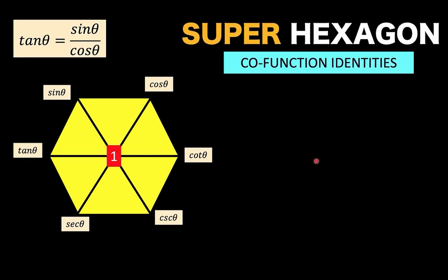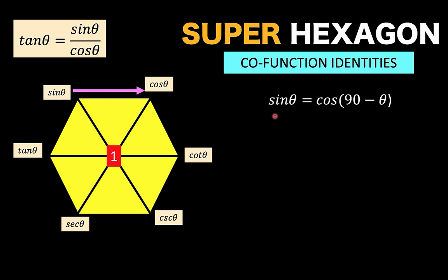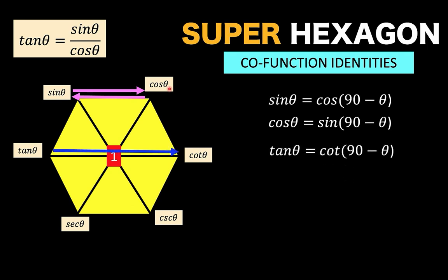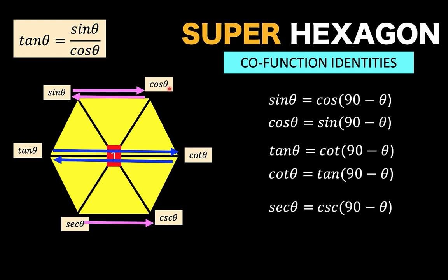Next, let's look at the cofunction identities. Constructing a horizontal arrow, sine theta equals the cosine of the complement of theta, which is cosine(90° − θ). Reversing the arrow gives cosine theta equals sine(90° − θ). The same is true for tangent and cotangent: tangent theta equals cotangent(90° − θ), and vice versa. Also, secant theta equals cosecant(90° − θ), and cosecant theta equals secant(90° − θ). That's another six identities added.